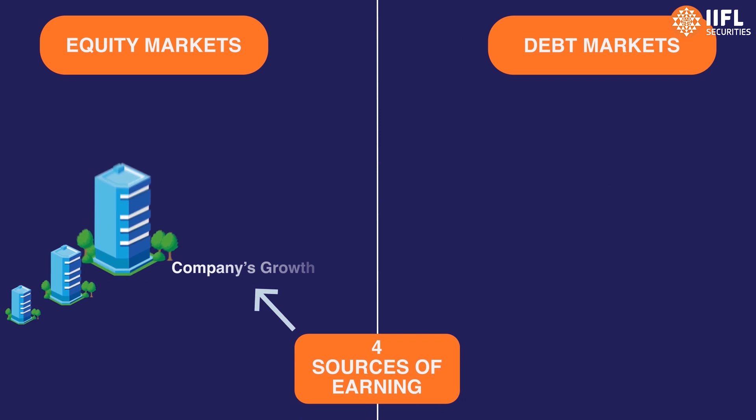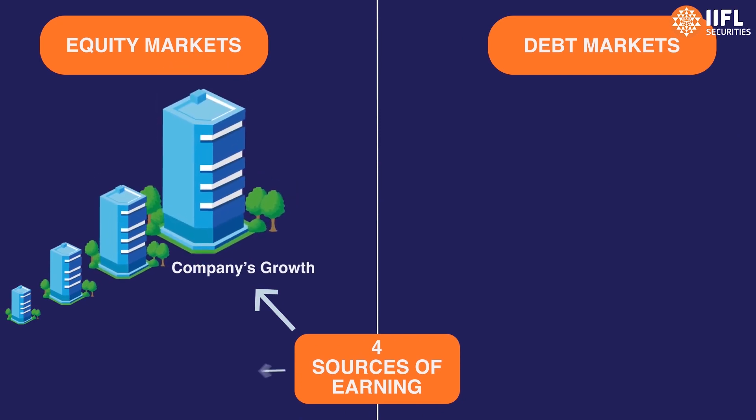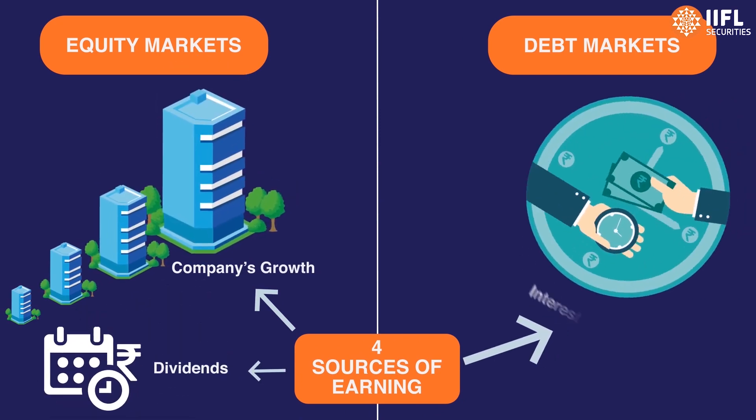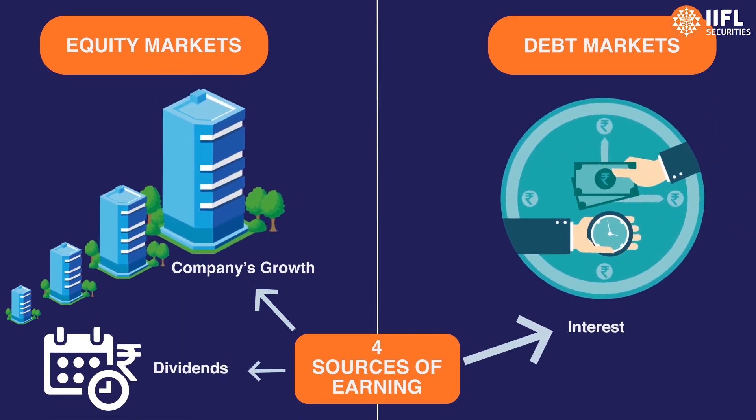Number four: Earnings. Equity market mein company ki growth aur dividends se earnings hooti hain, lekin debt markets mein earnings come from interest.